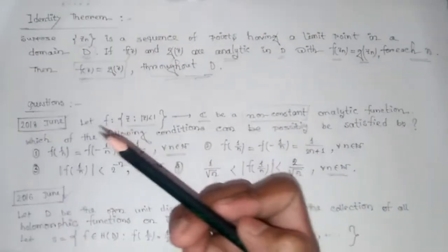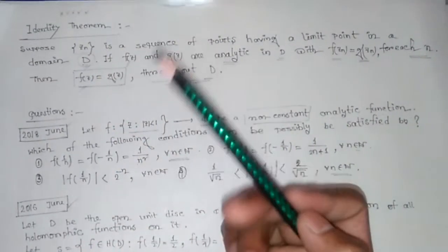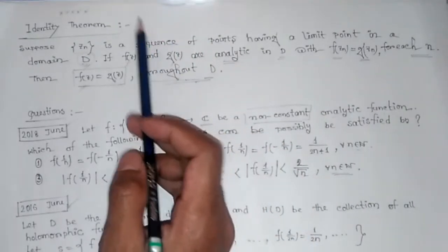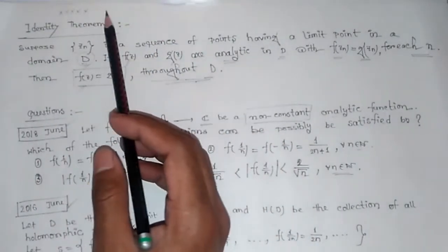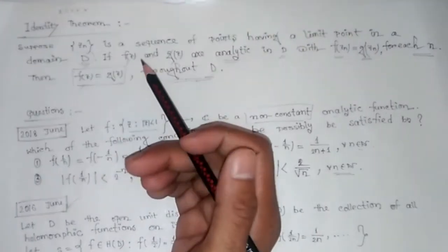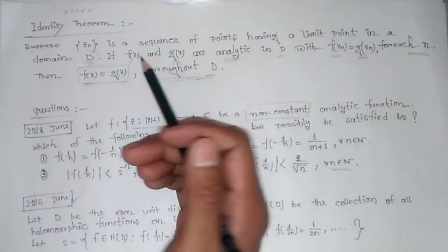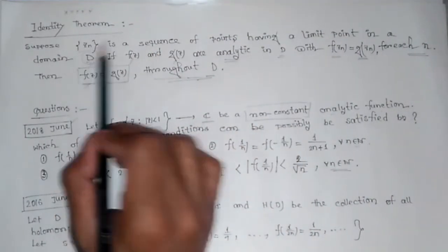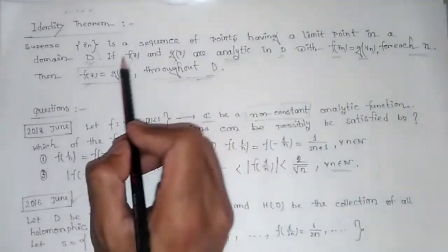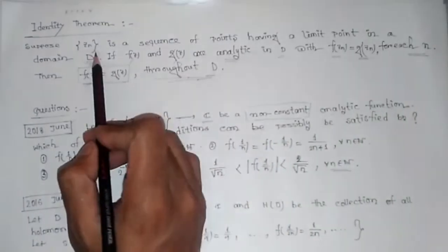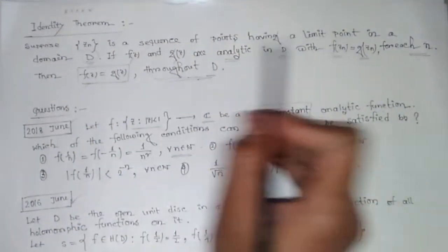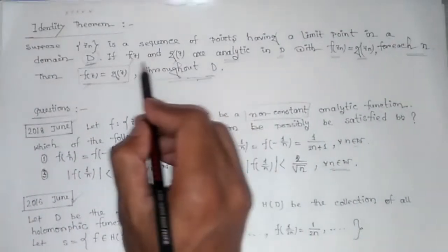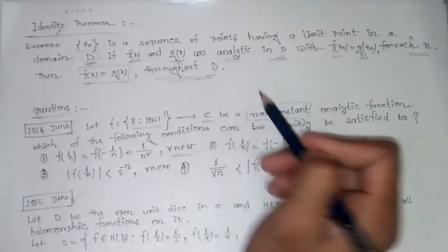Hello friend, today we will discuss an important theorem from complex variables — the Identity Theorem. This theorem is extremely important for our examinations: CSIR, UGC NET. The theorem states that if z_n is a sequence of points having a limit point in a domain D, and f(z) and g(z) are analytic in D...